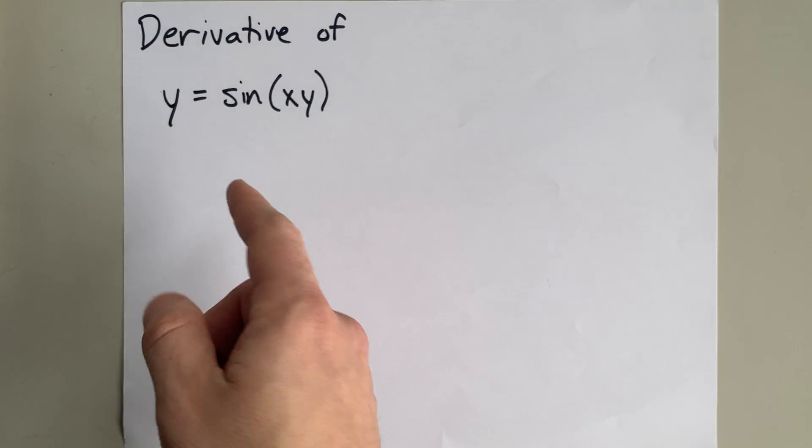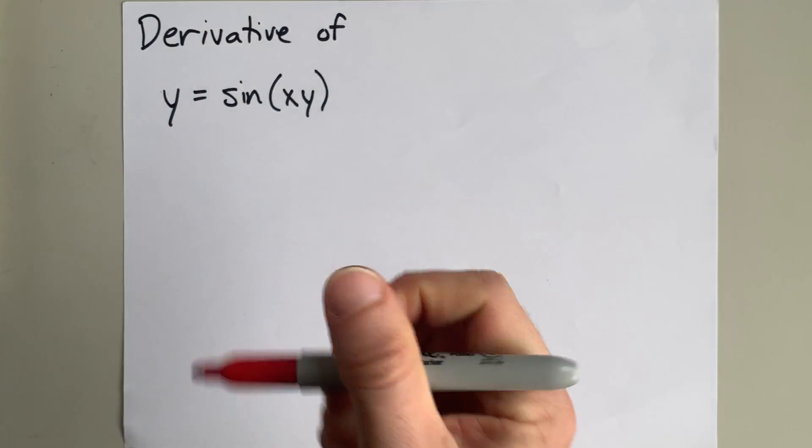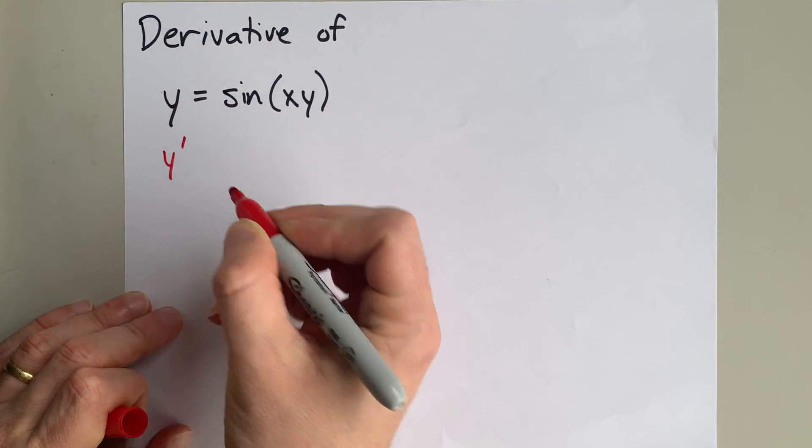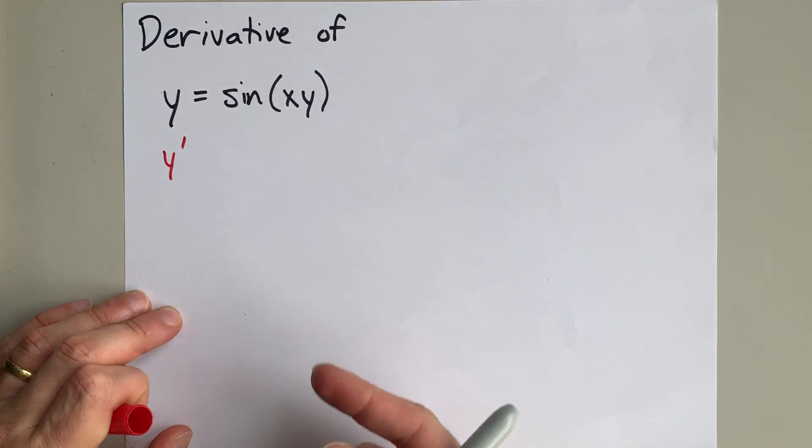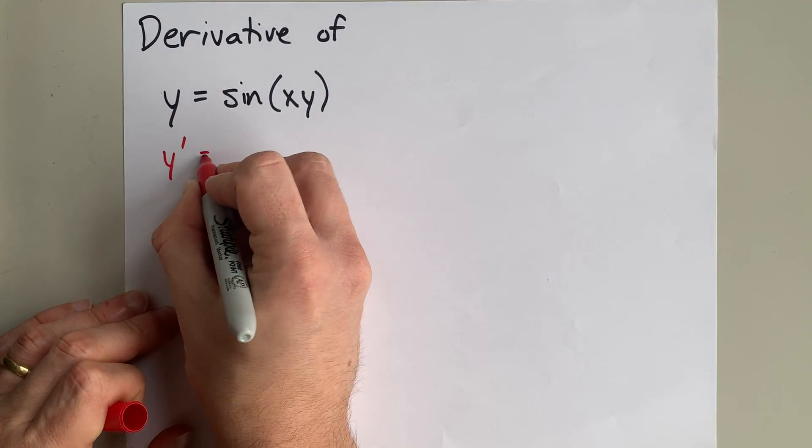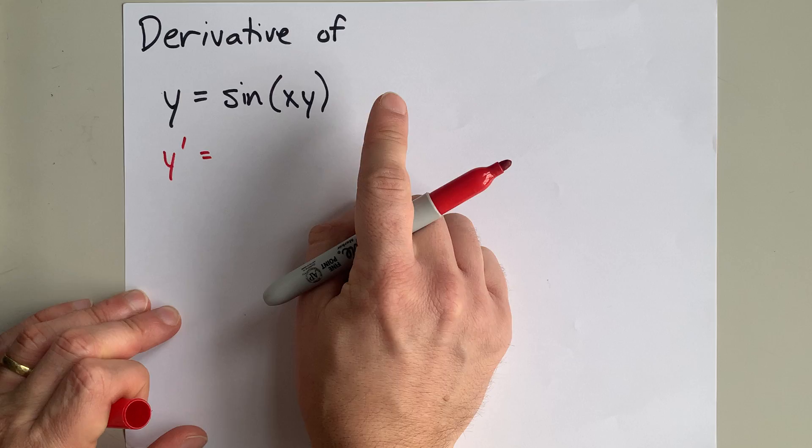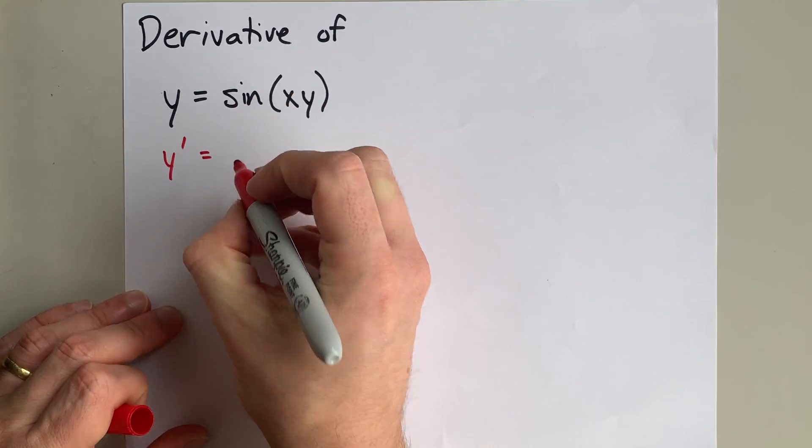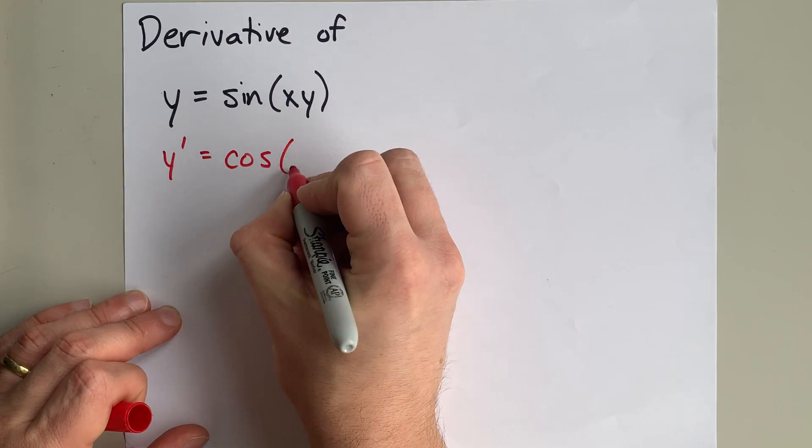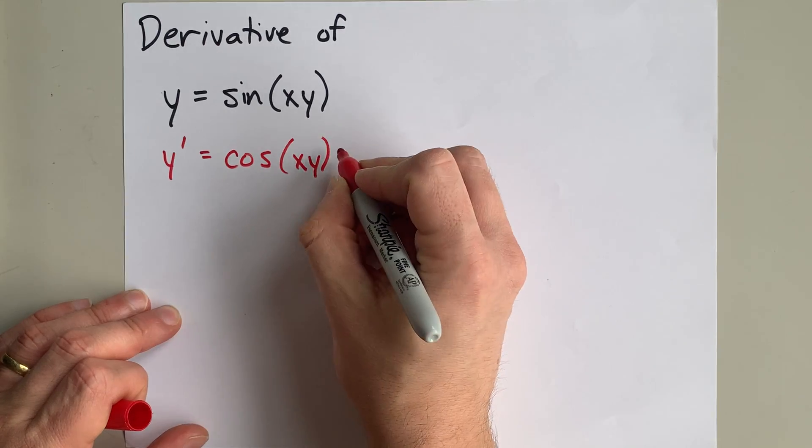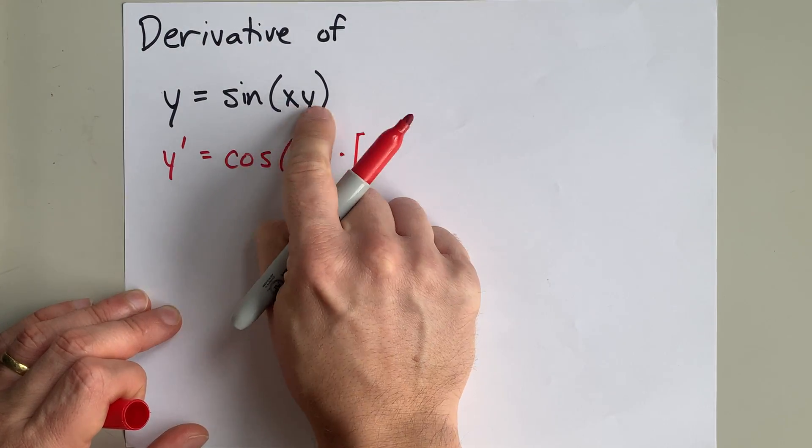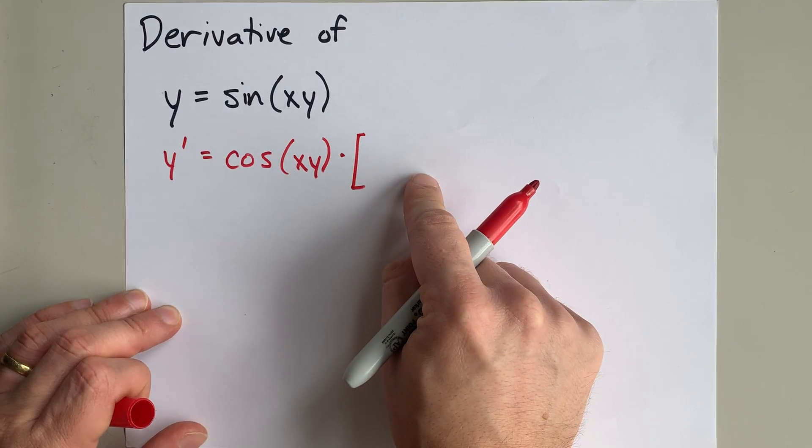Taking the derivative of y with respect to x is easy. It's dy/dx, or y prime in my world. Then I'm going to take the derivative of this. The derivative of sine anything is cosine of that same anything times the derivative of whatever's on the inside of the brackets here. That's chain rule.